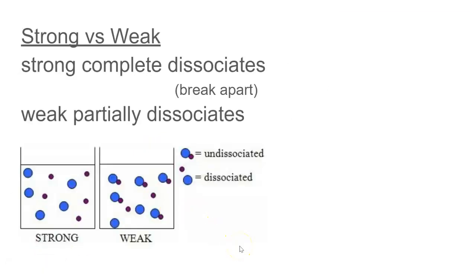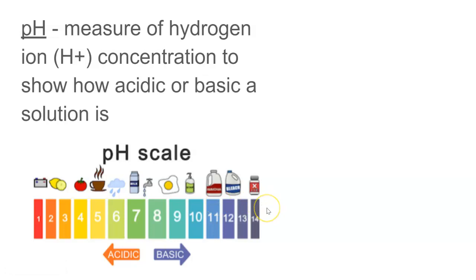When we talk about strong versus weak acids or bases, a strong is a complete dissociation, so it breaks apart. If it's weak, it partially dissociates. For weak versus strong acids, a strong acid will have a lower pH, and a weak acid would have a higher pH. A weak base would have a lower pH, and a strong base would have a higher pH. So the extremes on each end, the lowest number will have the highest acidity, and the highest number will have the highest base.